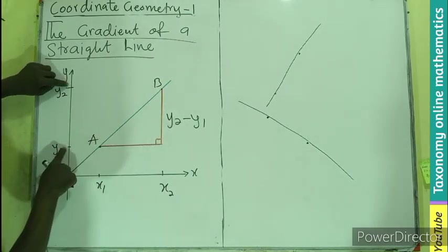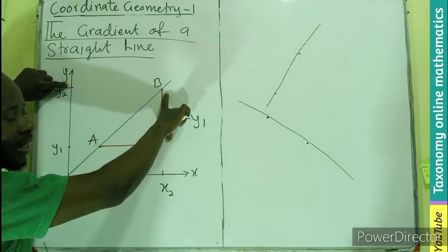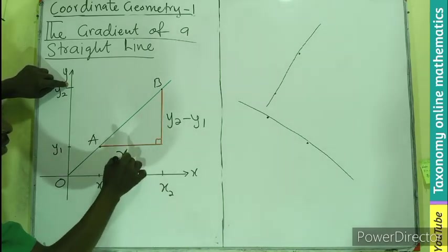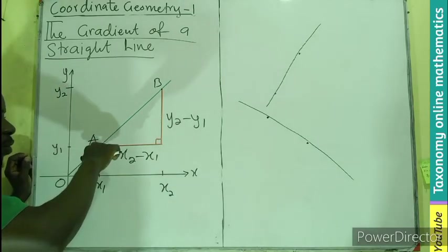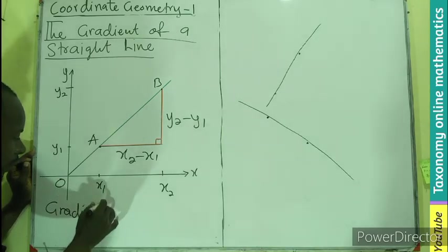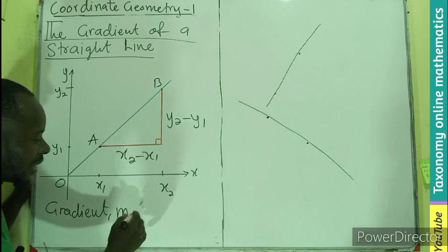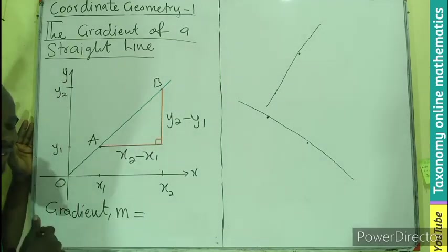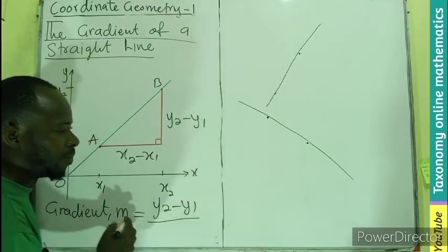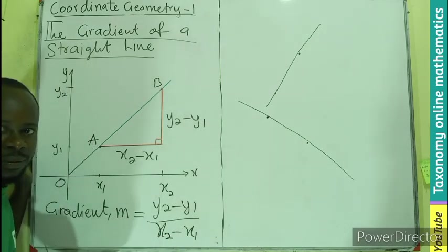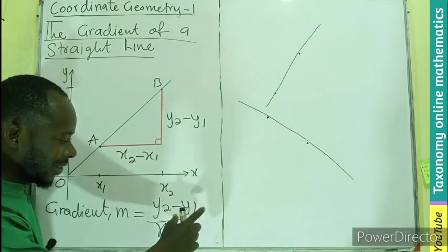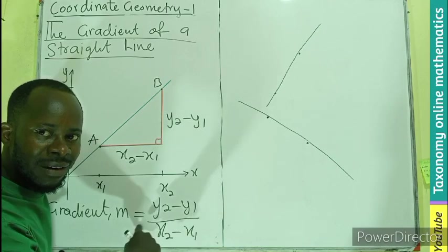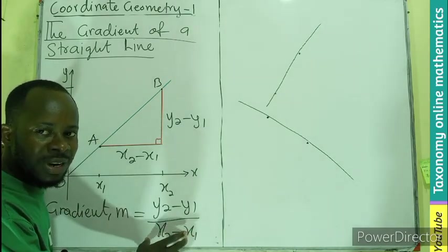So if I know here to be 4 and 7, it means 7 minus 4 gives me the distance between the two points on the line. Then in the same direction, I'll be looking for x2 minus x1 — the difference between them. So if I'm looking for the gradient, which is m — we use m to indicate the gradient — it is going to be the rise: y2 minus y1 divided by x2 minus x1. The change on the y-axis divided by the change on the x-axis. That is the rise over the run — this is how the gradient of the straight line is derived.